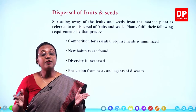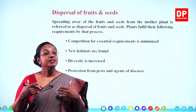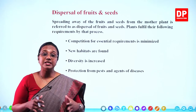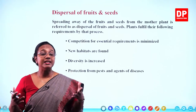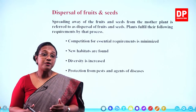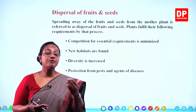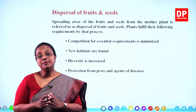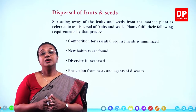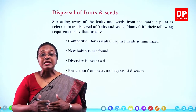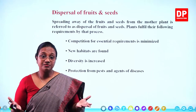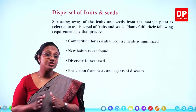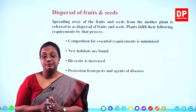If all the fruits and seeds produced on one mother plant fall under the same plant and start to grow, there will be a lot of competition, making it difficult for them to survive. Only a few seeds might grow into a new plant, and they will have no chances of finding a new habitat. So these fruits and seeds need to be dispersed.